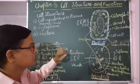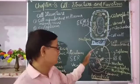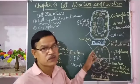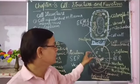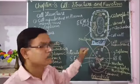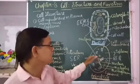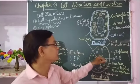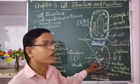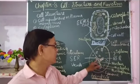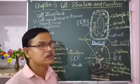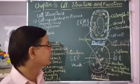Now, cytoplasm: whatever jelly-like substance is filled inside the cell membrane — in plant cell or animal cell both — that is called cytoplasm. It means leaving the nucleus, whatever content is between the nucleus and cell membrane, that is cytoplasm.